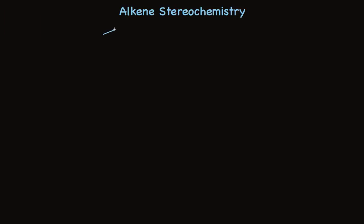I want to show you some things about stereochemistry of the alkenes — special aspects of their structure. But before I do that, take a quick look at butane with me. It's a 4-carbon structure we often write with a zigzag notation like this. It stands for this.